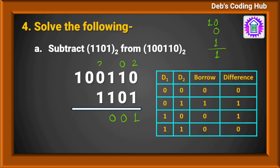We add the base, so 0 plus 2 is 2, and 2 minus 1 is 1. So 1 is the difference and 1 is borrowed. As we have done this, there will be a borrow of 1. If I deduct 1 from 0, I cannot deduct directly, so I take a borrow and it becomes 10. 10 minus 1 is 1, so it will be 1 here.